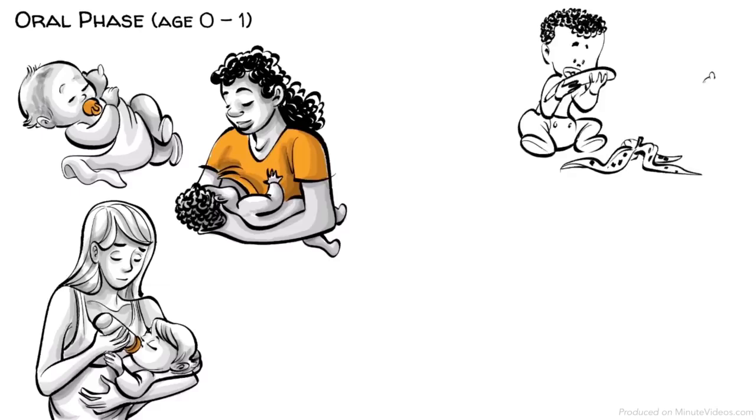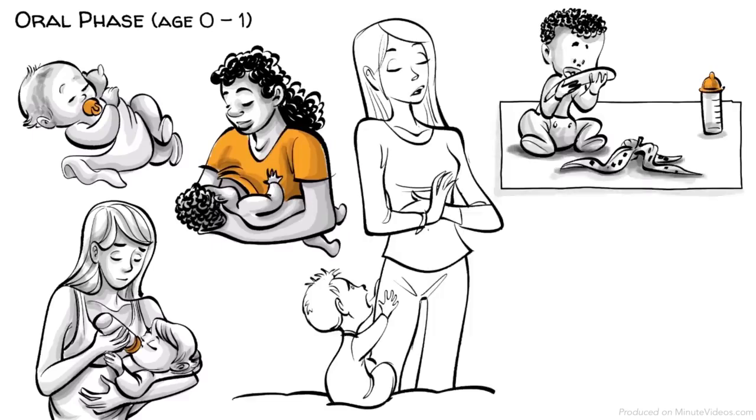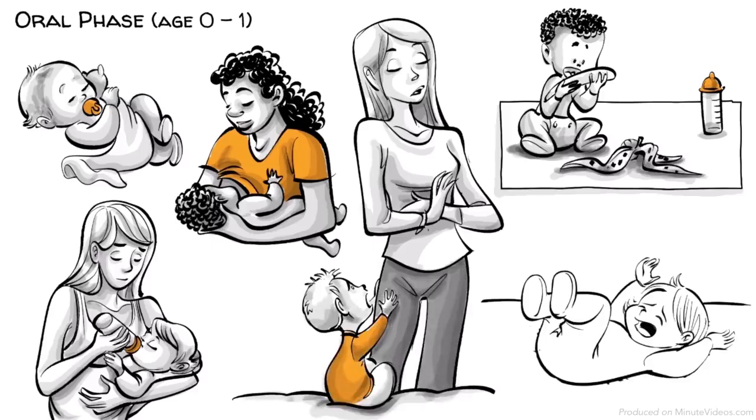Hans is weaned off his mother's breast without trauma. Ernst's mother stops feeding him within four months of birth which is too early. Ida is often left alone crying when she is hungry.